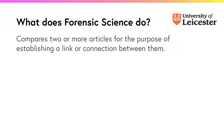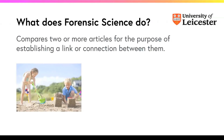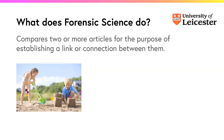So if forensic science is all about gathering and analyzing evidence, what it actually does in day-to-day life is to compare two or more articles together to try and establish a link or connection between them. What exactly does that mean?